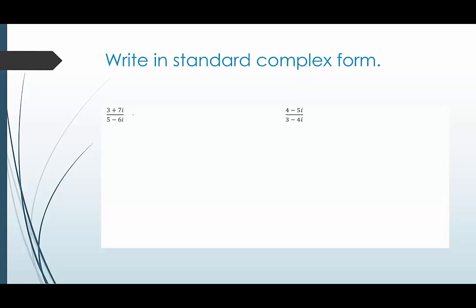In these last two examples I encourage you to pause the video and try them before I go over them. Okay for each of these we need to multiply by the complex conjugate of the denominator. So I need to multiply both the numerator and denominator by 5 plus 6i. And looking at that numerator just kind of cleaning it up off to the side.